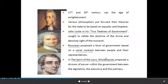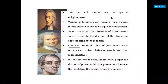Now in the 17th and 18th century, various philosophers gave their ideas for the enlightenment of society. First, John Locke — he wrote the book Two Treatises of Government, and according to this he refused the doctrine of divine and the absolute right of the monarch.